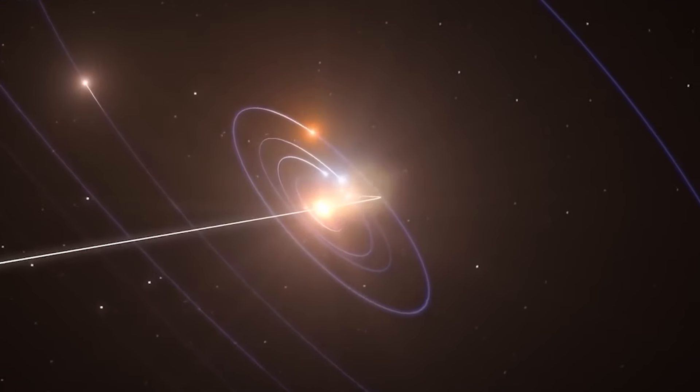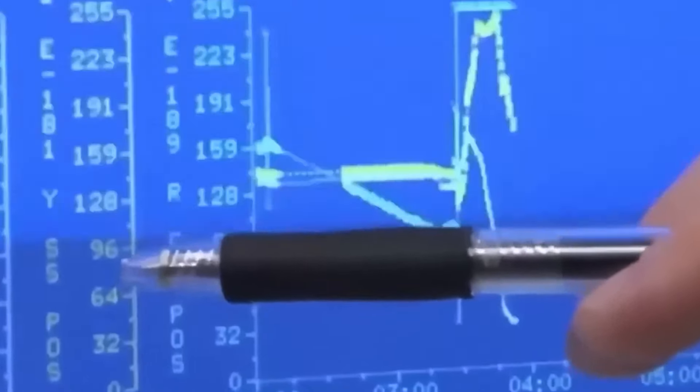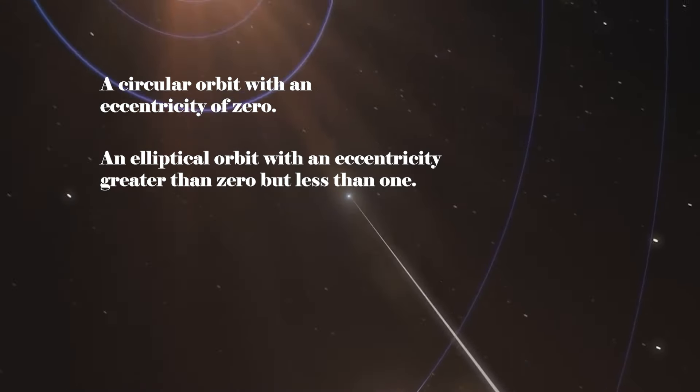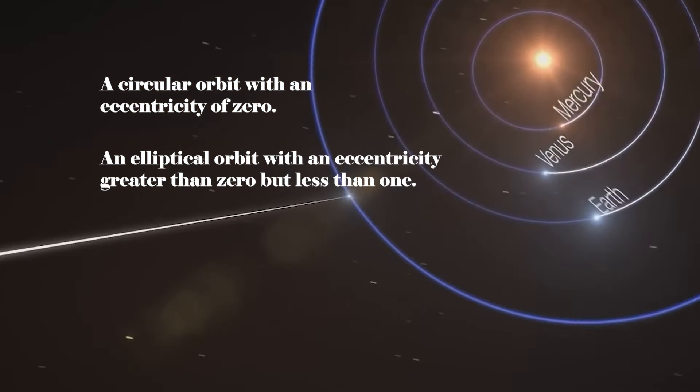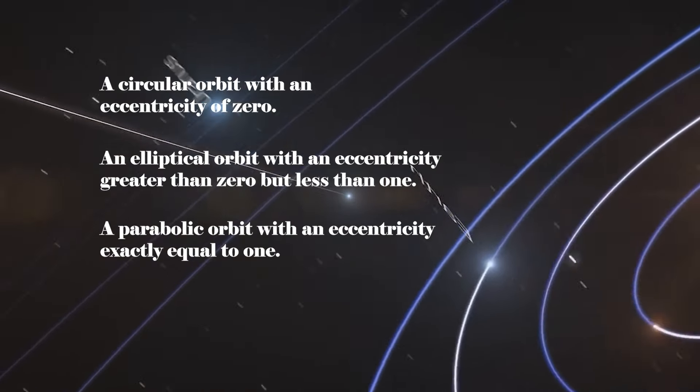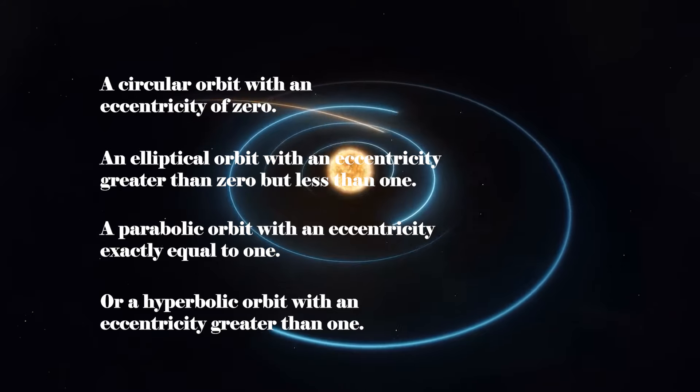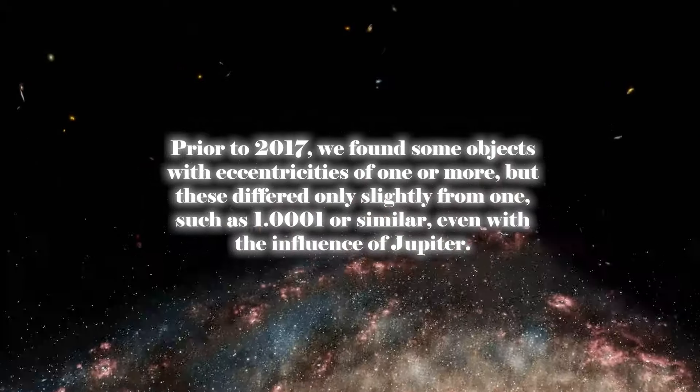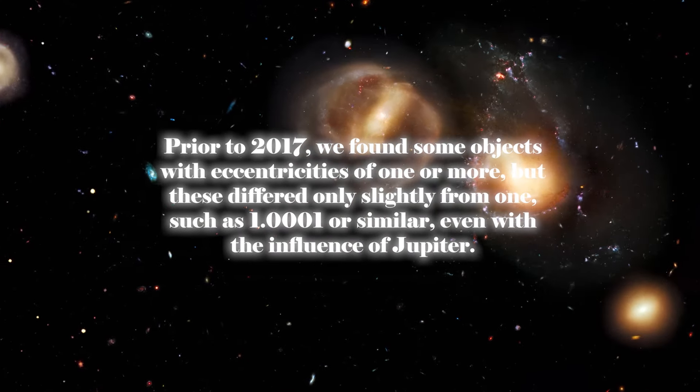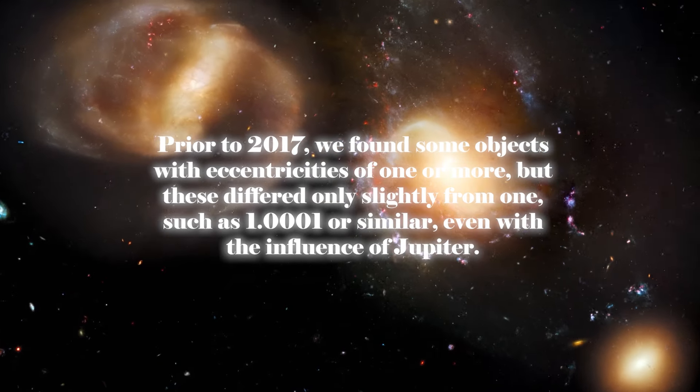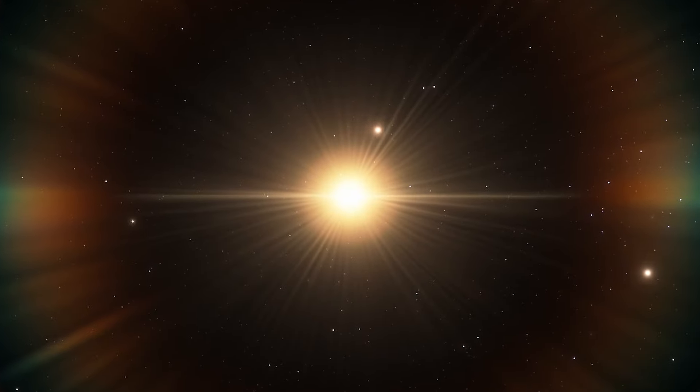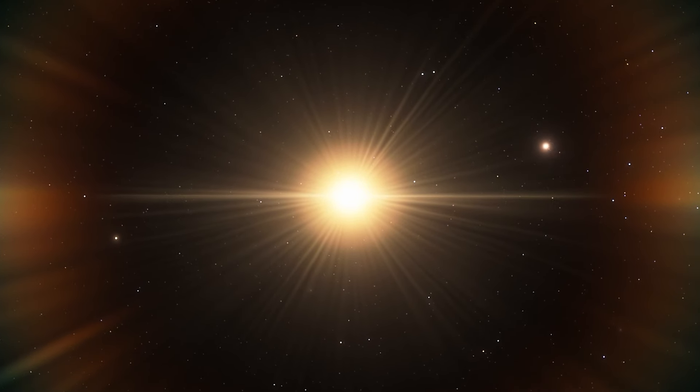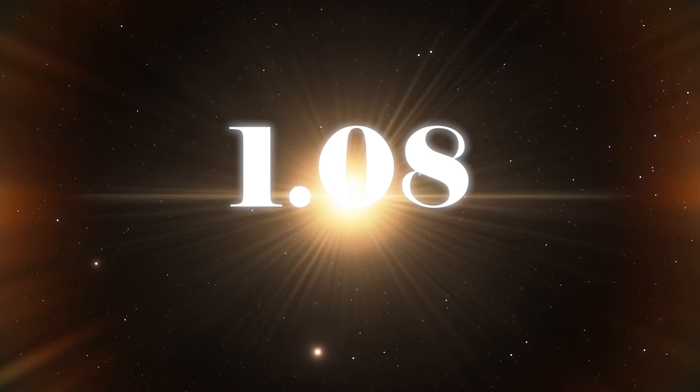Every object under the gravitational influence of the Sun will follow one of four specific orbits according to the laws of gravity: a circular orbit with an eccentricity of zero, an elliptical orbit with an eccentricity greater than zero but less than one, a parabolic orbit with an eccentricity exactly equal to one, or a hyperbolic orbit with an eccentricity greater than one. Prior to 2017, we found some objects with eccentricities of one or more, but these differed only slightly from one, such as 1.0001 or similar, even with the influence of Jupiter. The fastest-moving object within the solar system, which escapes the sun's gravity albeit by a small margin, has an eccentricity of 1.08.